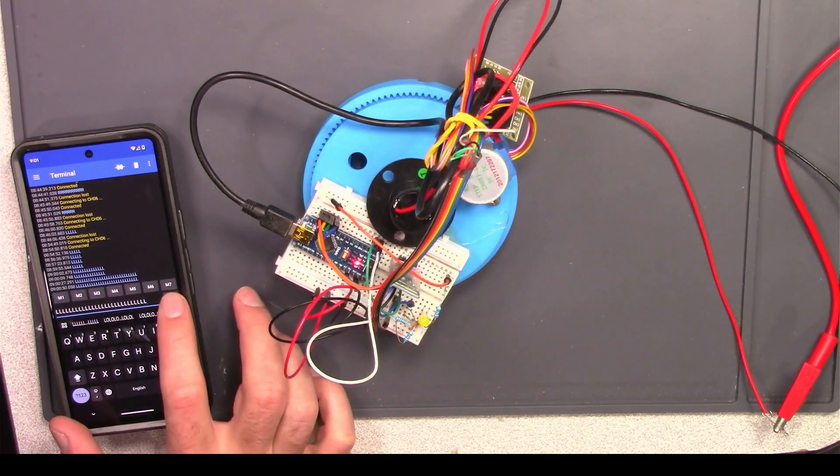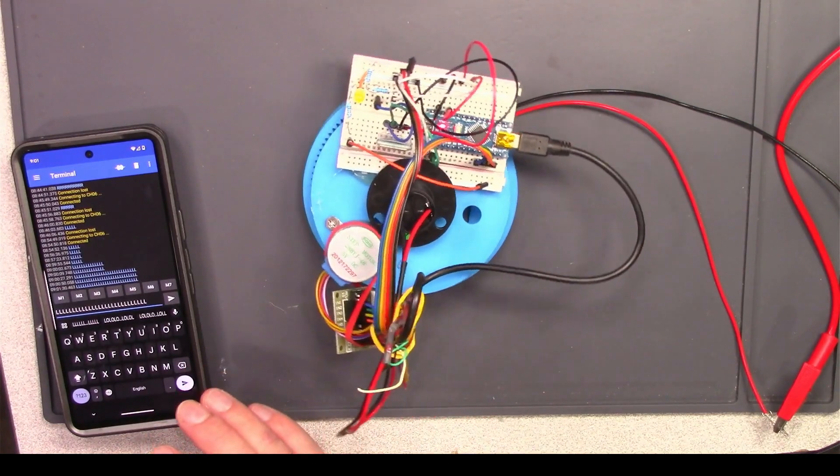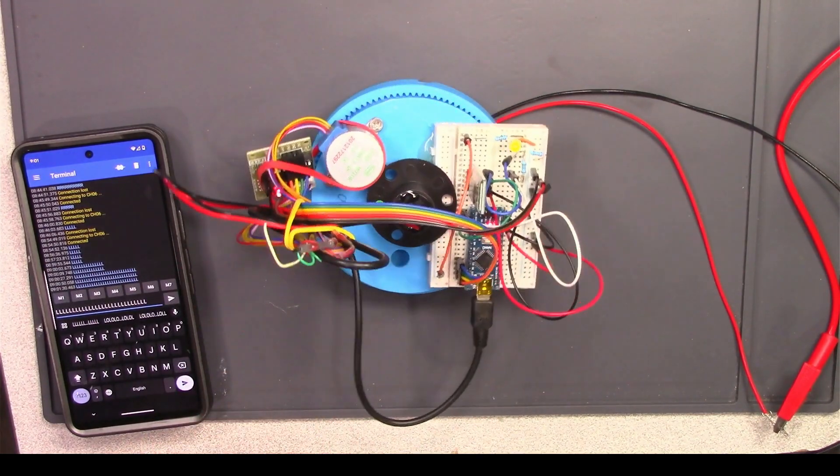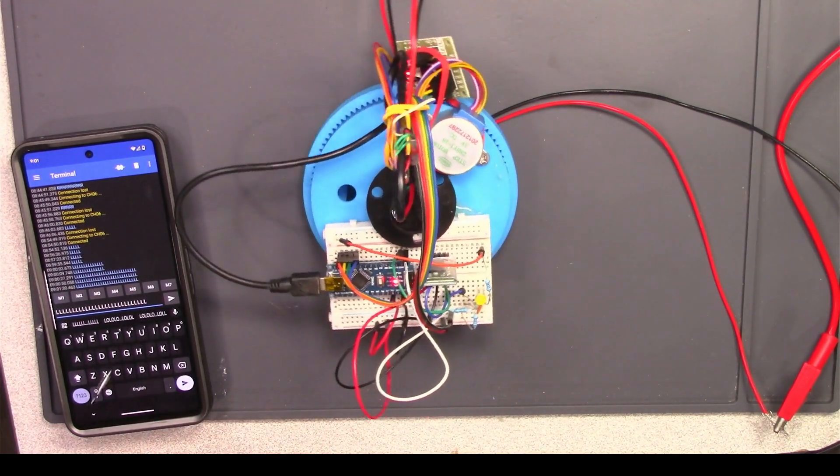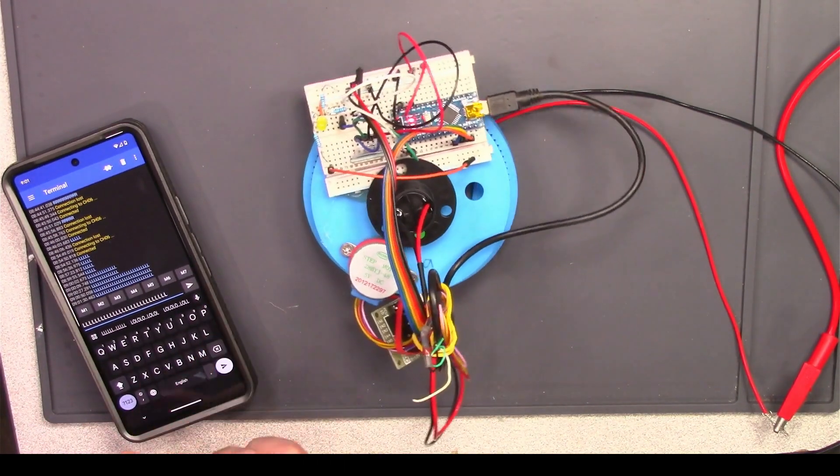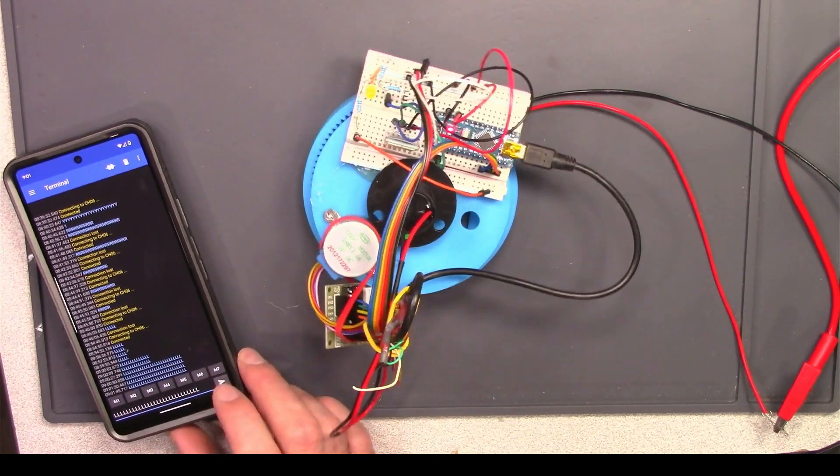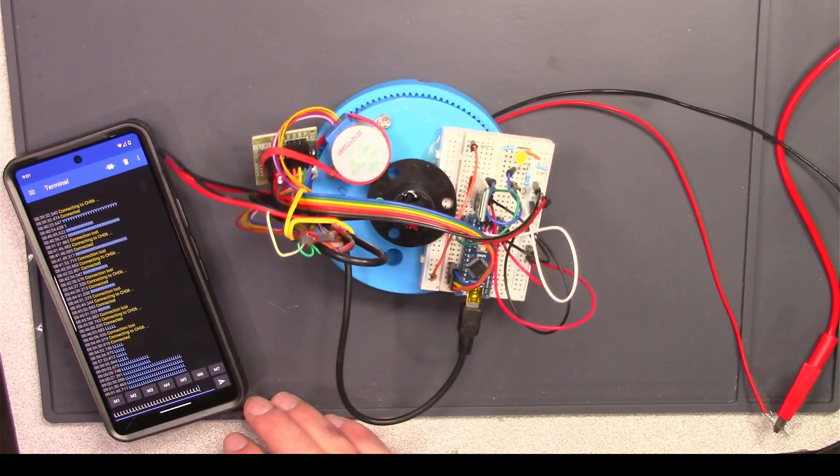This week we've built a continuously spinning plate. I'm gonna call her Susan. Susan is a combination of the last couple projects that we've worked on. Susan's controlled via Bluetooth and uses the same code that we use for our linear rail project.